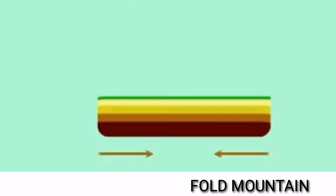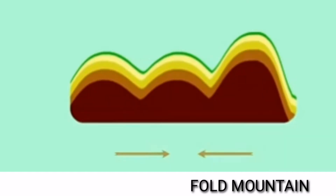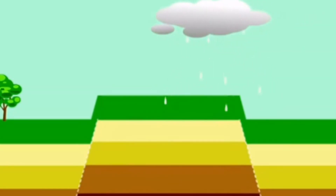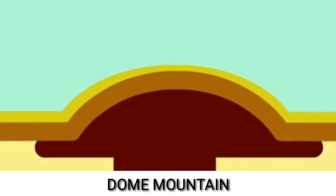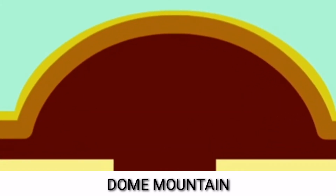There are three types of mountains: Fold Mountain and Fold Block Mountain. A mountain has steep sides and a pointed top.